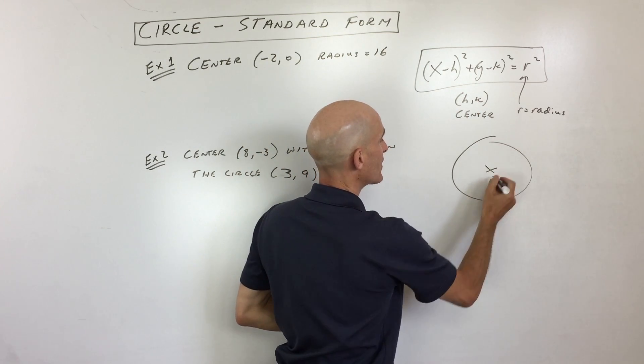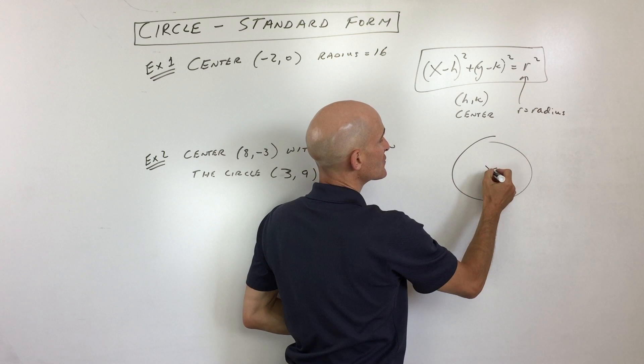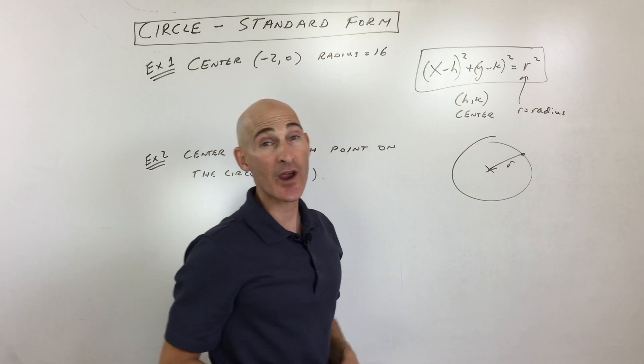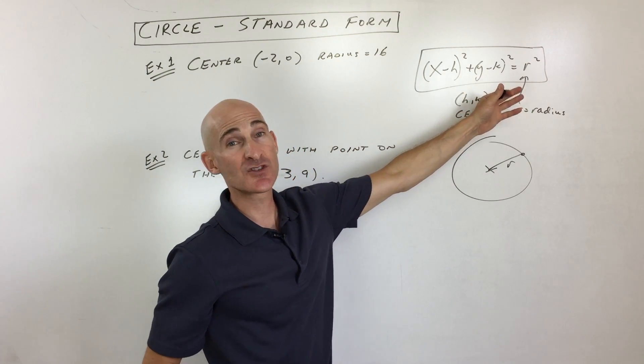So here's your circle, there's the center, and then r, that's the distance from the center of the circle to any point on the circle, so that's your radius. But notice it's the radius squared in the standard form of the equation of circles.